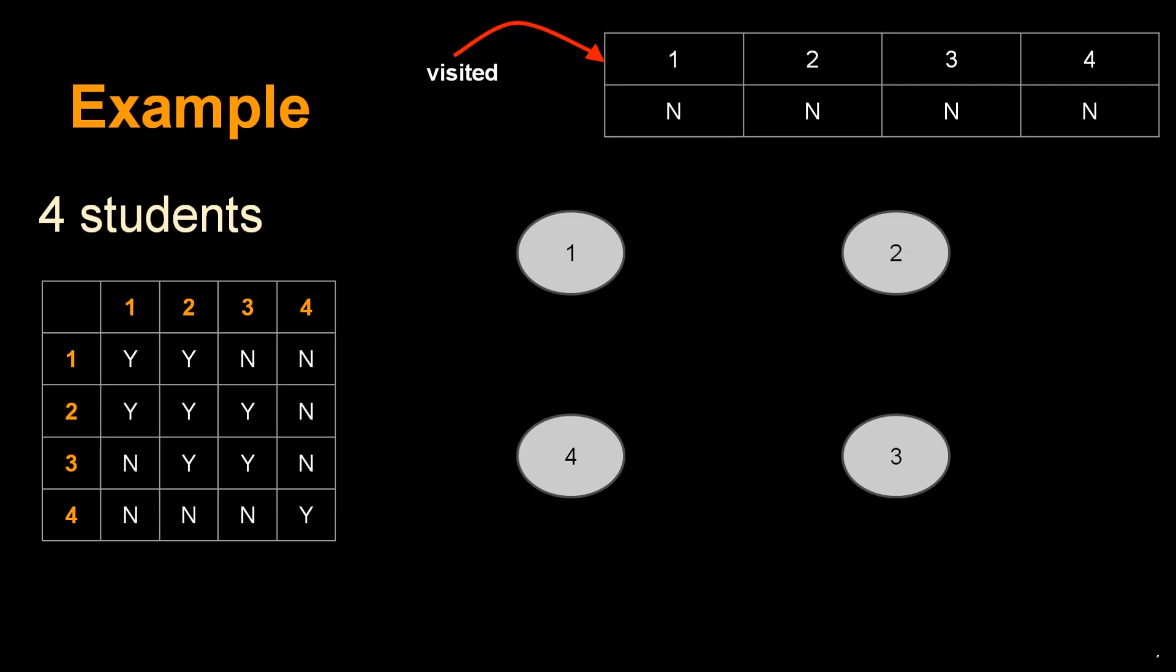Let's visualize the friend circles by creating 4 nodes (1, 2, 3, 4) of a graph. Starting with student 1, we set the number of circles equal to 1. Since we've visited student 1, we mark visited[1]=Y.